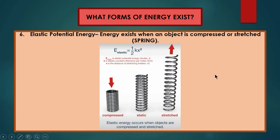Elastic potential energy is an energy that exists when an object is compressed or stretched. This kind of energy is usually obtained from a spring — when the spring is stretched or compressed you obtain elastic potential energy. The formula for elastic potential energy is ½kx². The greater the compression or stretch, the higher the elastic potential energy.